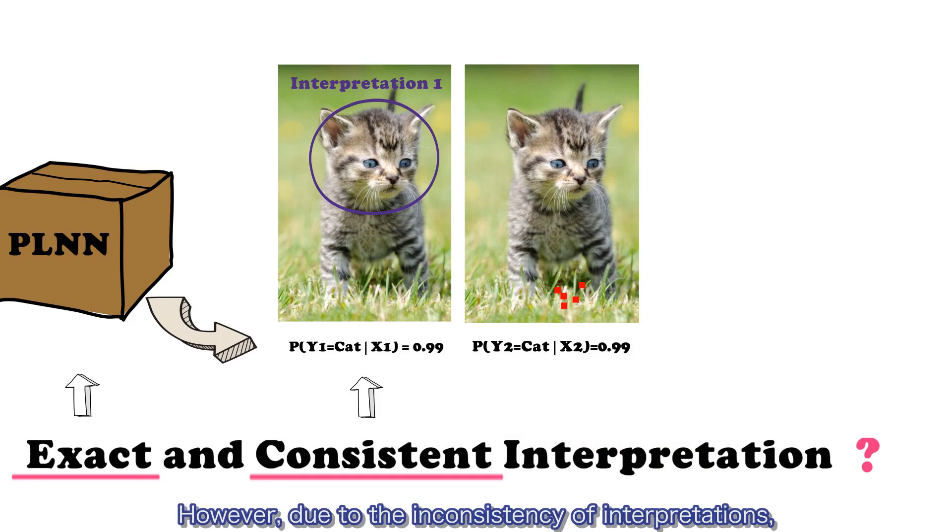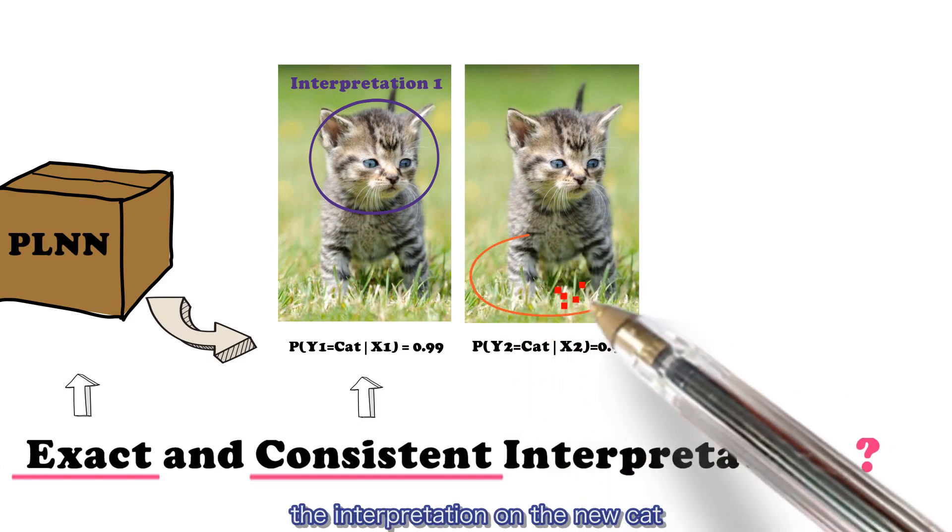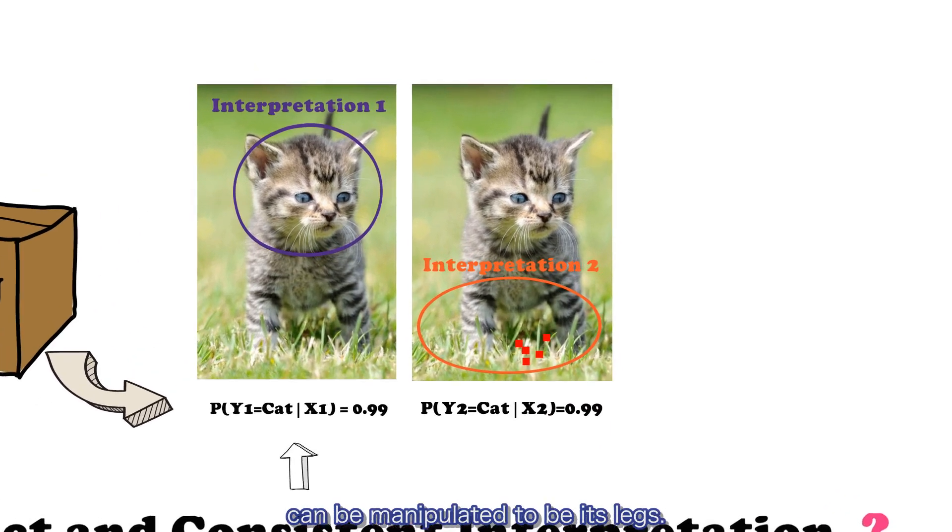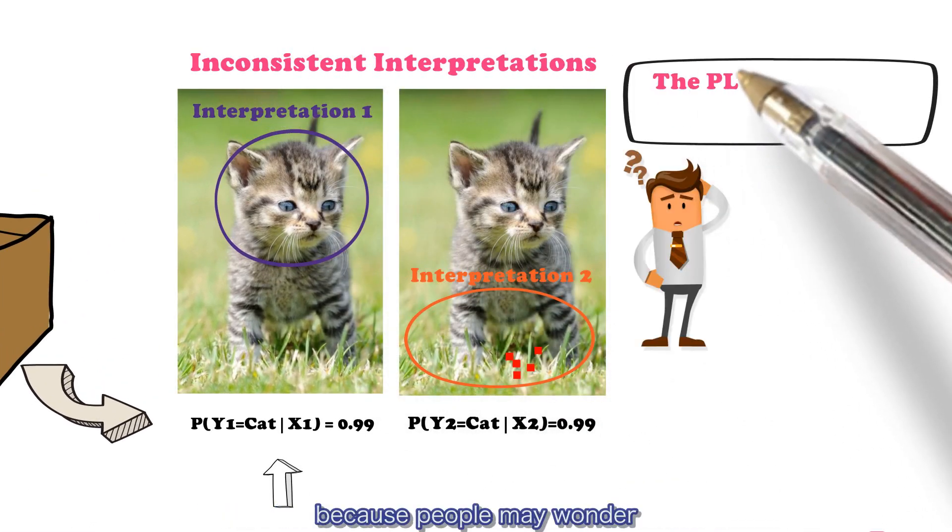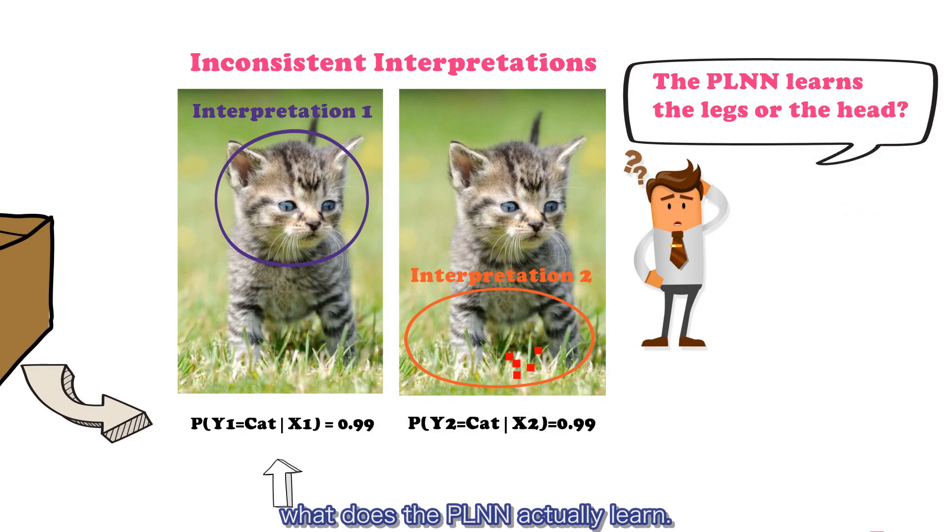However, due to the inconsistency of the interpretations, the interpretation of the new cat can be manipulated to be its legs. These inconsistent interpretations are confusing because people may wonder, what does the PLNN actually learn?